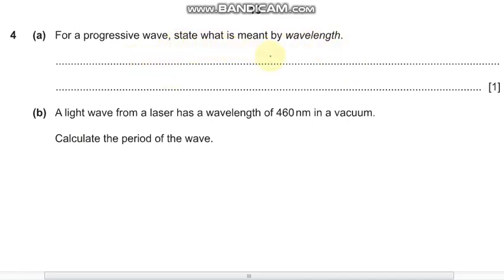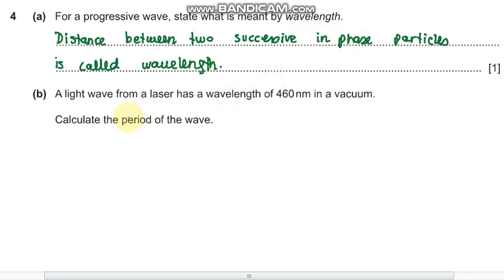Moving on to question number 4. It says for a progressive wave, state what is meant by wavelength. So wavelength is basically the distance between two successive in-phase particles.